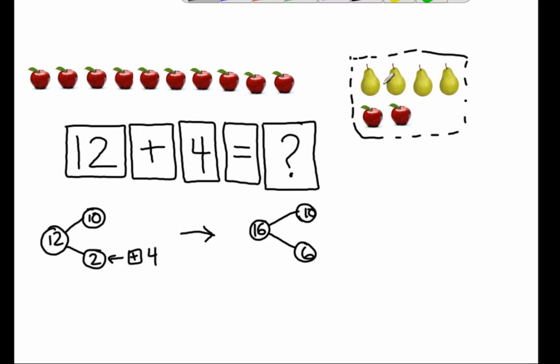Now 10 and six more is 10, 11, 12, 13, 14, 15, 16. That's how I knew that 10 and six made 16.